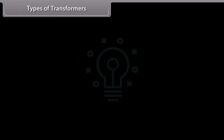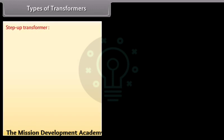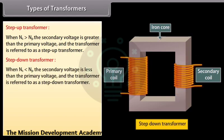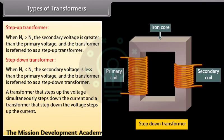Types of transformers. Transformers are of two types. Step-up transformer: when the secondary voltage is greater than the primary voltage, the transformer is referred to as a step-up transformer. Step-down transformer: when the secondary voltage is less than the primary voltage, the transformer is referred to as a step-down transformer. A transformer that steps up the voltage simultaneously steps down the current, and vice versa: IS/IP = VP/VS = NP/NS.